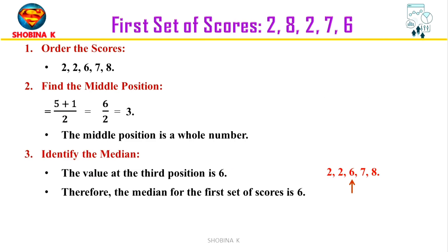The first example has scores 2, 8, 2, 7, and 6. First, arrange the scores in ascending order: 2, 2, 6, 7, and 8. Now we need to find the middle position.